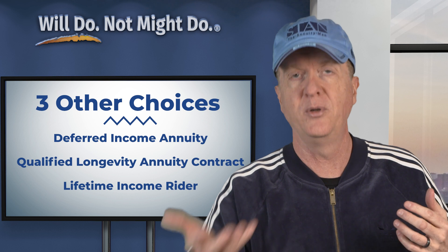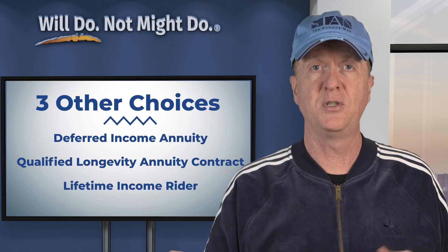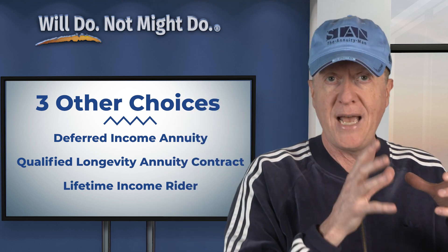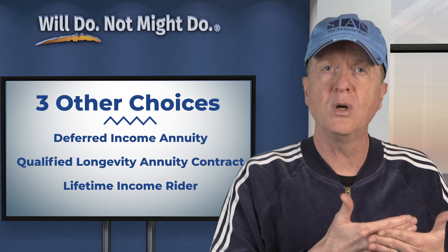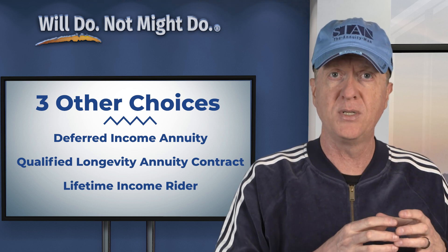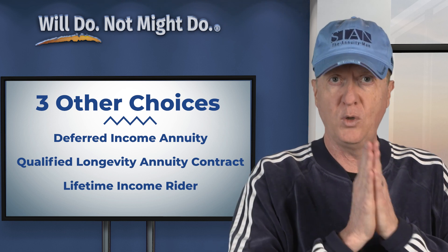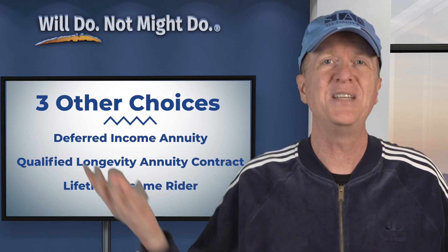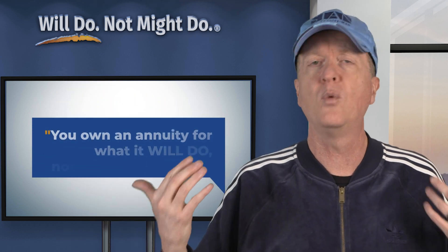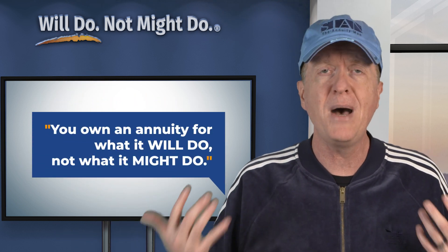We don't sell variable annuities because we won't sell anything with the potential to go down. The income riders attached to indexed annuities historically have higher contractual guaranteed income amounts when quoted side by side. I live in a world of contractual guarantees — you own an annuity for what it will do, not what it might do.